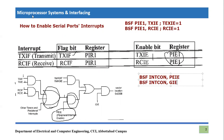In this way, we have enabled the PEIE bit and the GIE bit. Now whenever transmission completes, the transmission flag will go high and we will receive this notification to the microcontroller as an interrupt. And when reception of eight bits is complete, the RCIF bit will become high and we will receive notification as an interrupt to the microcontroller.